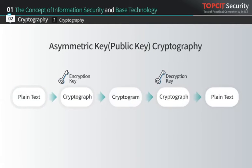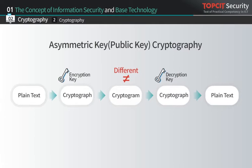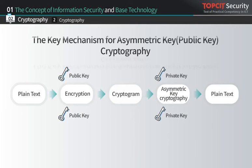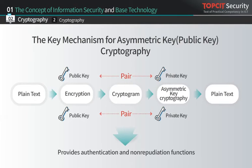Asymmetric key cryptography uses different keys for encryption and decryption. This algorithm was first designed by Diffie and Hellman to solve the problem of safe key distribution. The keys consist of two pairs — public keys and private keys — operating in reverse relations. Through this key mechanism, asymmetric key cryptography also provides additional services such as authentication and non-repudiation.